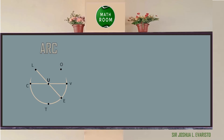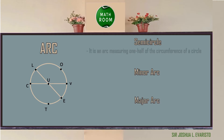To understand more about circles, let's discover arcs. An arc is a part of a circle. It can be in the form of a semicircle, minor arc, or major arc. A semicircle is an arc measuring one half of the circumference of a circle. It is named by using the two endpoints and another point on the arc.